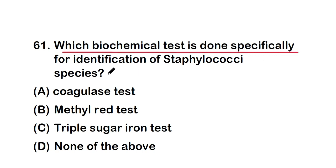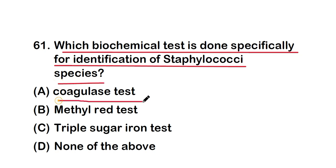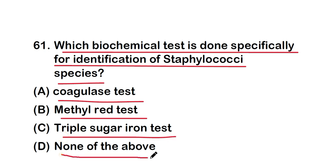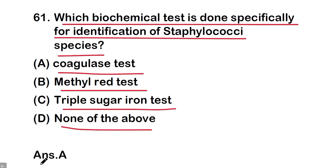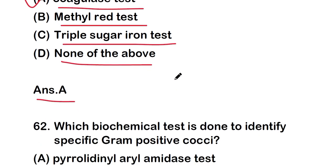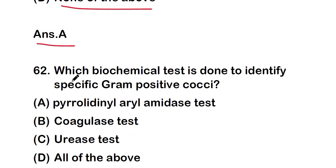The first question is: which biochemical test is done specifically for identification of Staphylococcus species? The options are coagulase test, methyl red test, triple sugar iron test, or none of the above. The right answer is option A — it is the coagulase test, which is performed to specifically identify Staphylococcus species.